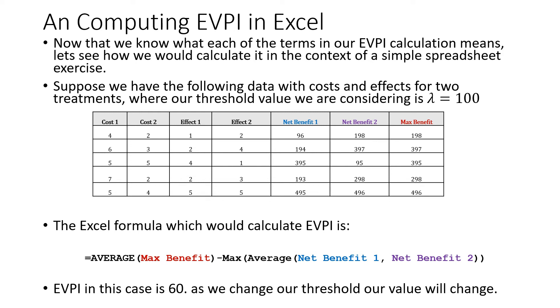The Excel formula which we'll use to calculate the expected value of perfect information in this case is: we look for the average maximum net benefit, that is the average of our best responses minus the maximum of our two average outcomes here. With this threshold, the expected value of perfect information is 60.